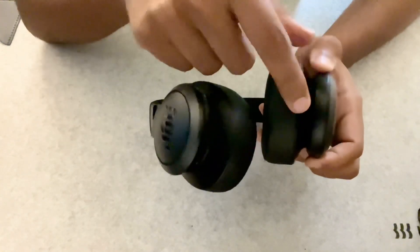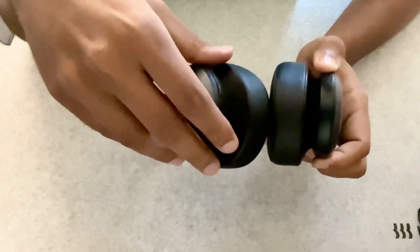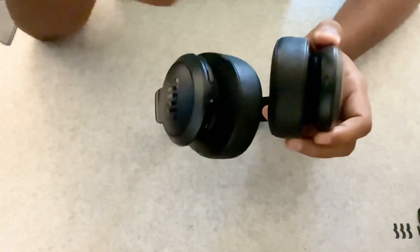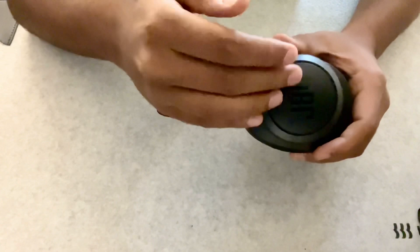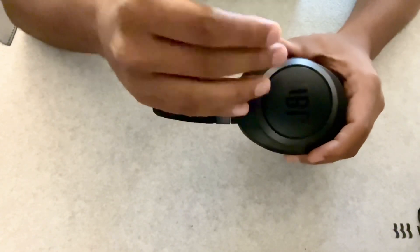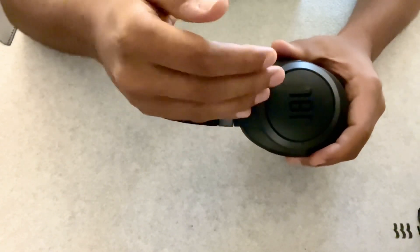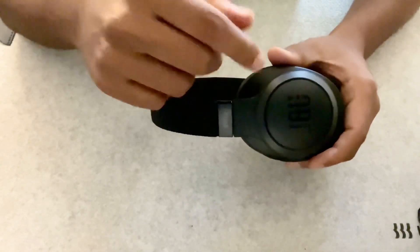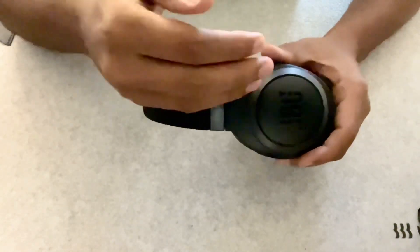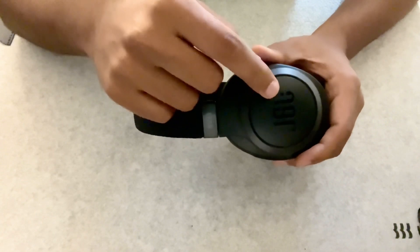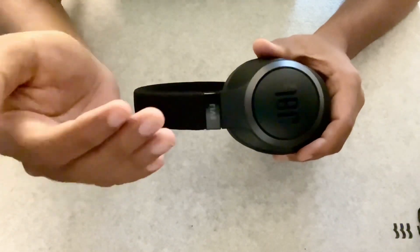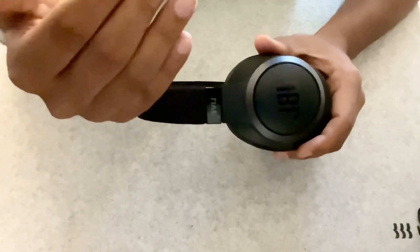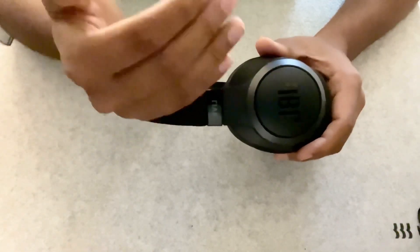Now we also have the charging port over here, so this uses a typical USB-A type charger. I wish they could have given USB Type-C. And on the left-hand side we will also have our Google Assistant and Alexa activation buttons. So there are no physical buttons that you see over here, but you just need to tap on the JBL logo so that your Google Assistant or Amazon Echo voice assistants are activated.